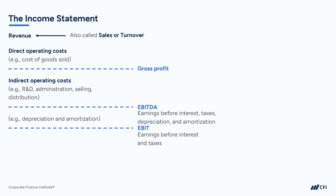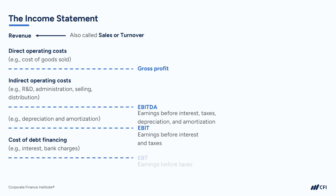Once we go below the EBIT line on the income statement, we then start looking at different types of expenses, such as taxes and debt financing costs. The next line is the cost of debt financing. This includes things like interest expense and bank charges. After deducting these interest expenses, there's often another subtotal called Earnings Before Tax. Below that, we deduct taxes and we finally arrive at net income, also referred to commonly as the bottom line.